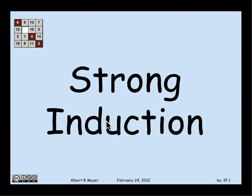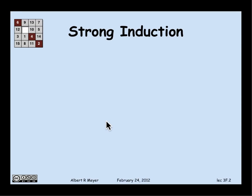So now we come to an interesting variant of ordinary induction called strong induction. And here's how it works. With strong induction, just as with ordinary induction, you prove the base case P(0). You're trying to prove for all n, P(n). So you prove P(0).